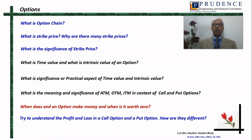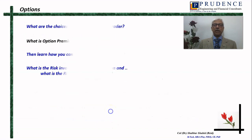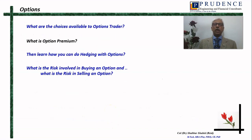Try to understand the profit and loss in a call option and a put option — these two are opposite things. Profit and loss in a call option and profit and loss in a put option are entirely different. How are they different? Then, what are the choices available to an option trader? What is an option premium? Why is an option buyer required to pay a premium, and why does the option seller take the premium?